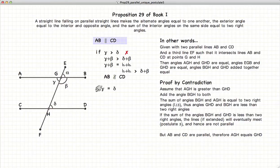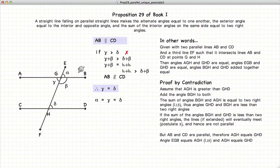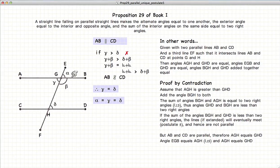Consequently, gamma is equal to delta. We have gamma equal to alpha since they are vertical angles, so gamma equals alpha equals delta, or alpha is equal to delta.